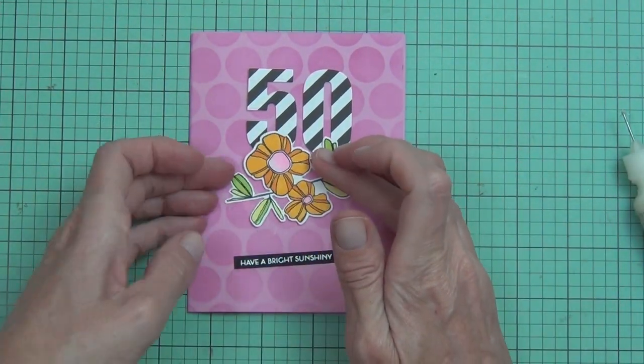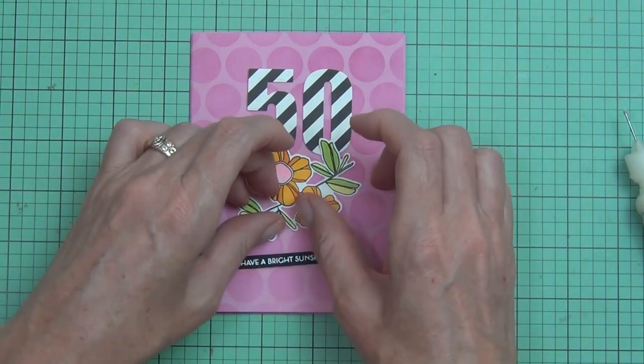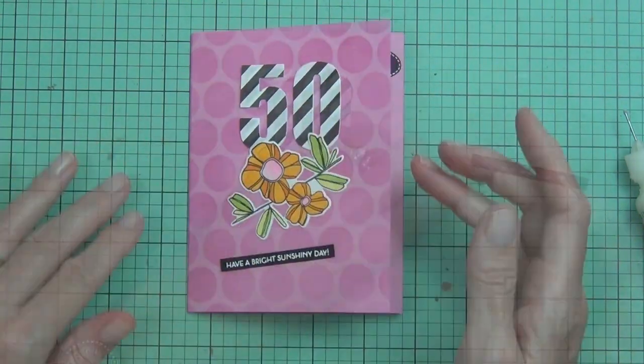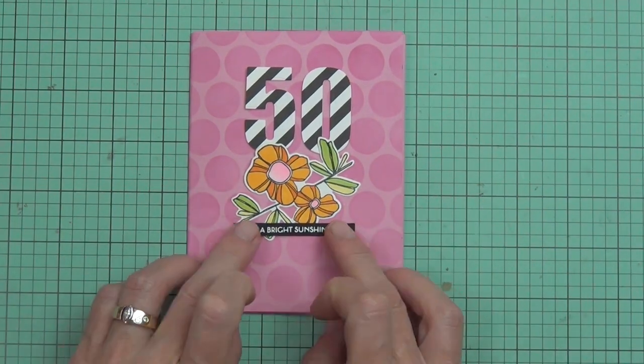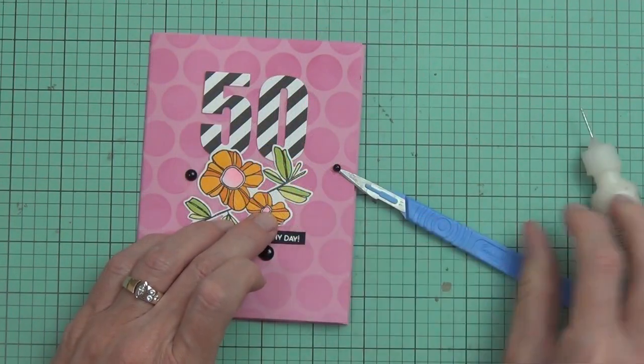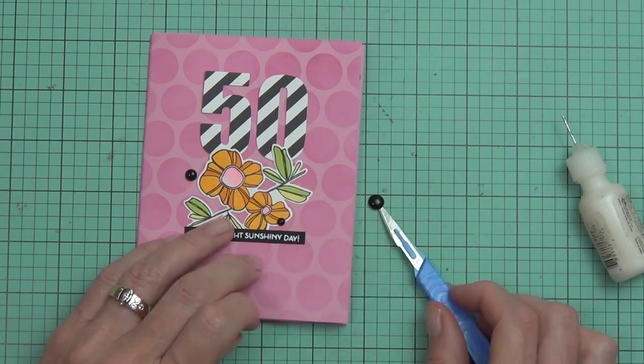I did attach all the front portions directly to the card front. I didn't use any foam adhesive—I wanted it to be fairly flat so that I could post it.